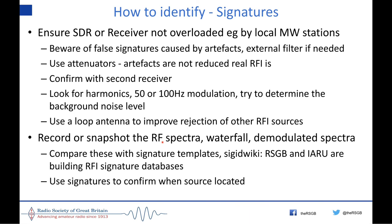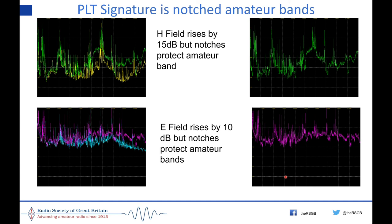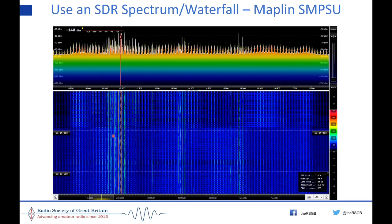Here are different types of interference signatures. This is VDSL on H-field and VDSL on E-field — at a different time of day with less real signals around, you can actually see the VDSL bands on the E-field as well as the H-field. During the evening the noise floor rises and you can't see them as clearly.